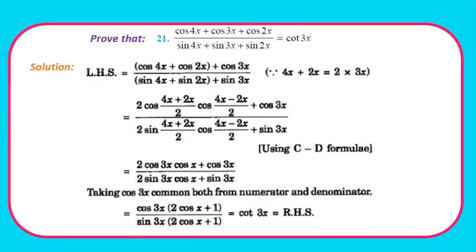Question 21: Prove (cos4x + cos3x + cos2x)/(sin4x + sin3x + sin2x) = cot3x. Grouping cos4x + cos2x using cosC + cosD gives 2cos3x·cosx, and sin4x + sin2x using sinC + sinD gives 2sin3x·cosx. Adding cos3x and sin3x respectively: numerator = cos3x(2cosx + 1), denominator = sin3x(2cosx + 1). These cancel to give cos3x/sin3x = cot3x. Pause and note down the proof.